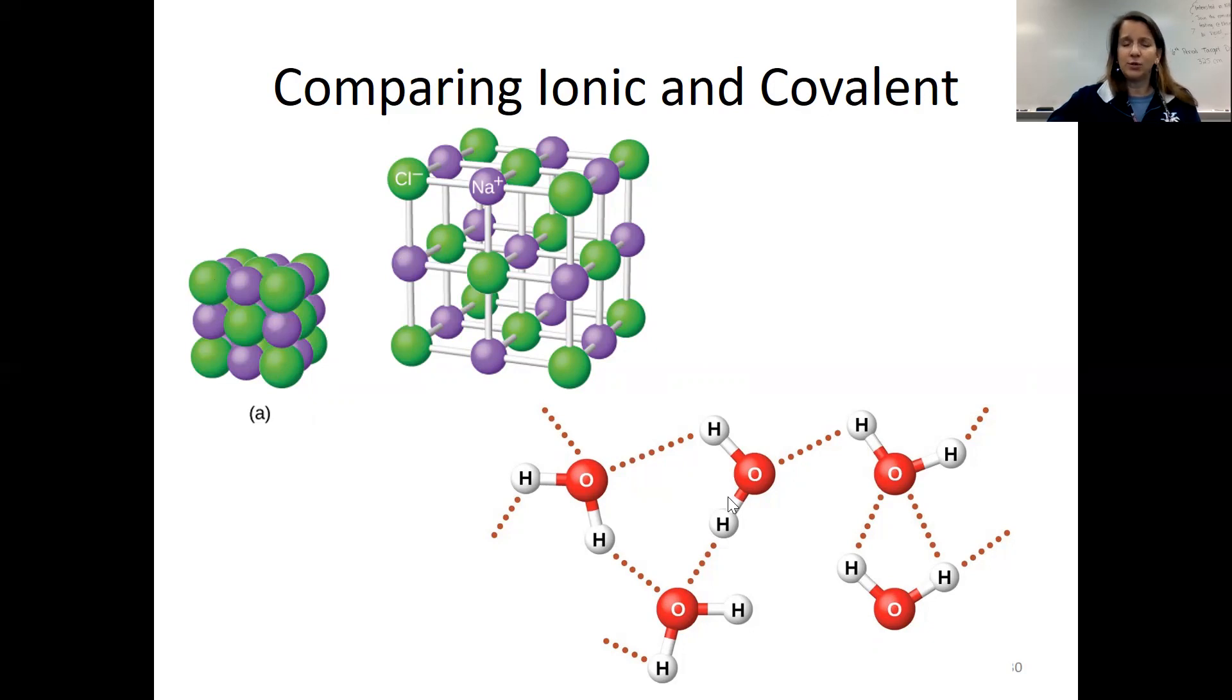The covalent molecules are held together by these intermolecular forces. And intermolecular forces are weaker than intramolecular forces. So these little dotted lines here, attracting between two water molecules are weaker than this attraction between the positive and the negative ion.